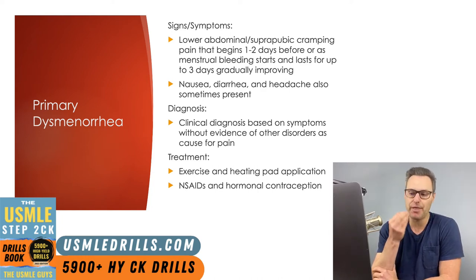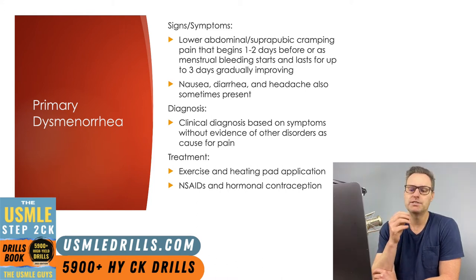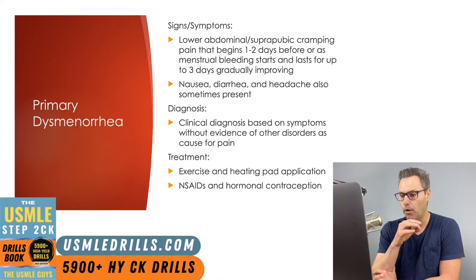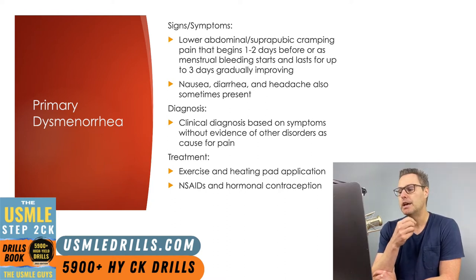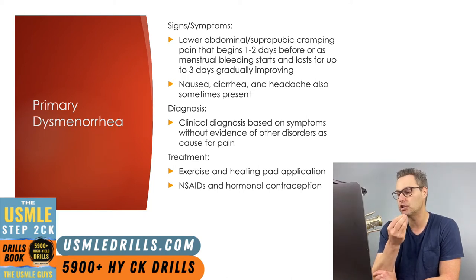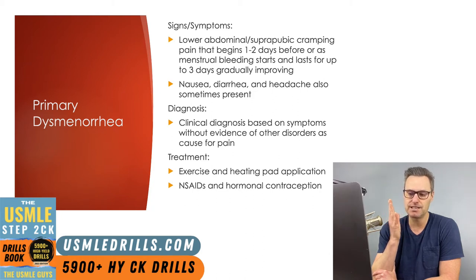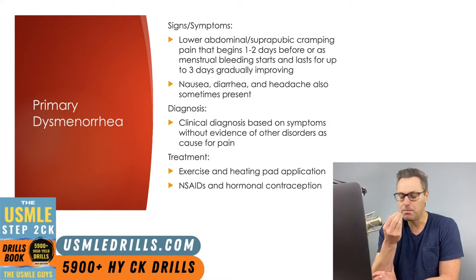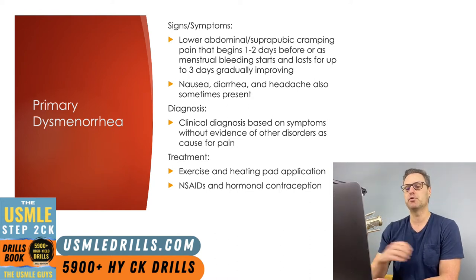Secondary dysmenorrhea is due to a pathological cause and tends to worsen as the patient ages. Once other possible causes have been ruled out and the patient is diagnosed with primary dysmenorrhea, treatment includes encouraging exercise as well as heating pad application, as both are non-pharmacologic methods shown to improve pain scores. If insufficient, NSAIDs and/or hormonal contraception can be added to further improve symptoms.